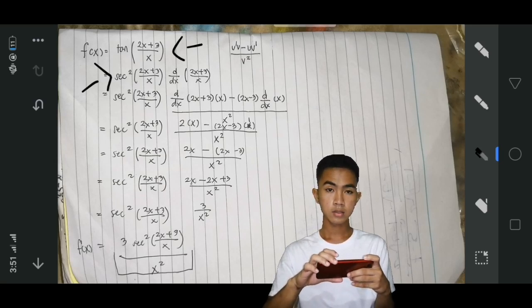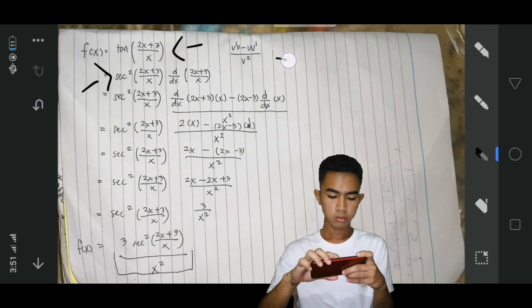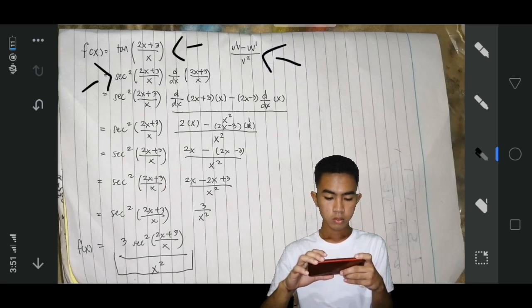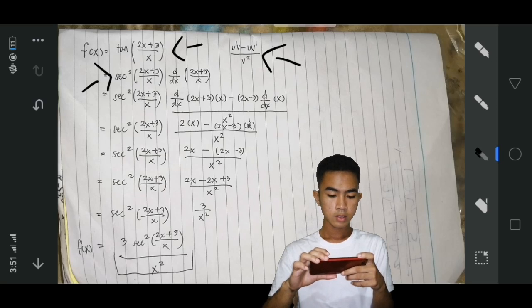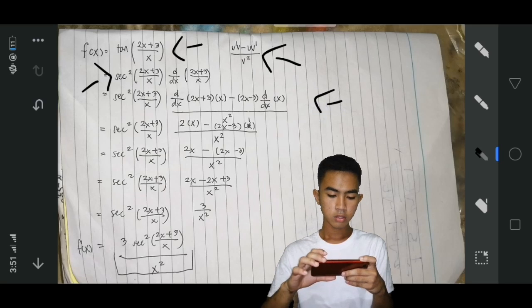After, we have to apply the quotient rule. Secant squared of 2x plus 3 over x, and substitute the given quotient rule: u prime v minus u v prime over v squared.